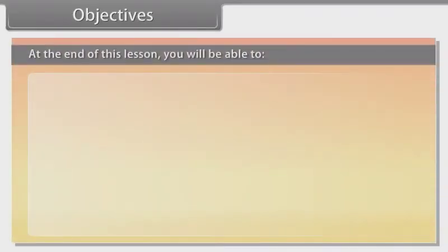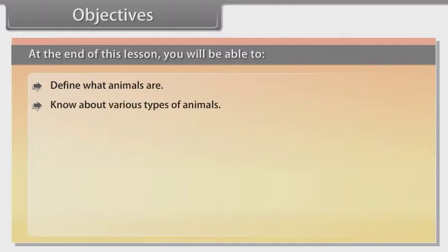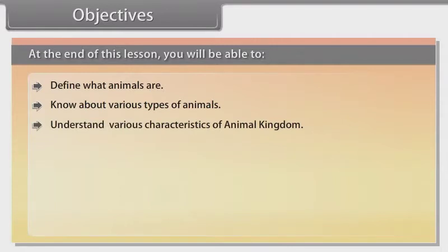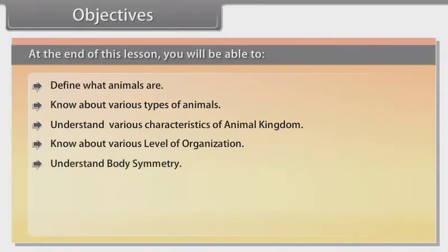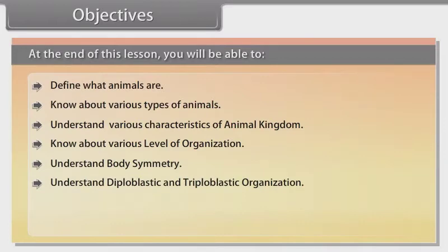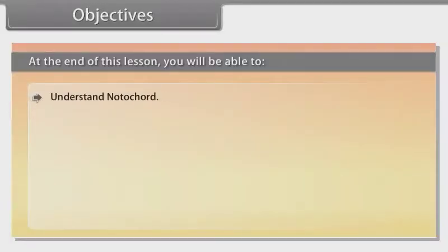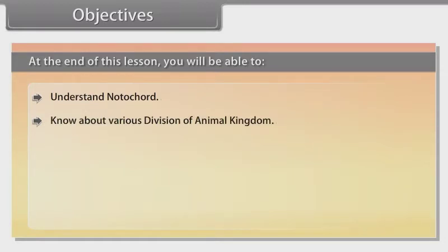At the end of this lesson, you will be able to define what animals are, know about various types of animals, understand various characteristics of the animal kingdom, know about various levels of organization, understand body symmetry, understand diploblastic and triploblastic organization, know about coelom, understand segmentation, understand notochord, and know about various divisions of the animal kingdom.